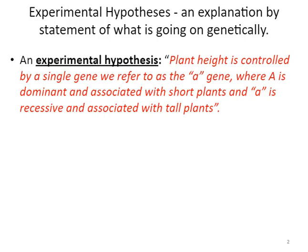We've been working in class on Mendelian genetics problems — monohybrid crosses, dihybrid crosses and the like. If you were working in a Mendelian system — by system I mean you're studying the inheritance of a Mendelian trait, something that shows Mendelian patterns in inheritance — then as a scientist you would develop an experimental hypothesis, which is a stated explanation of what's going on genetically. You might word it something like: plant height is controlled by a single gene referred to as the A gene, where big A is dominant and associated with short plants, and little a is recessive and associated with tall plants. There's your experimental hypothesis.